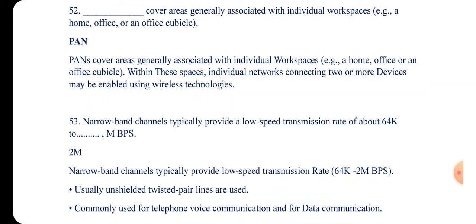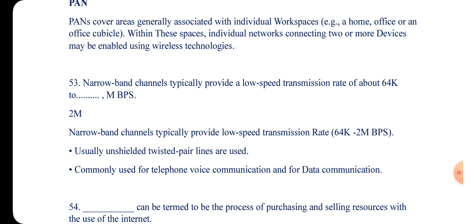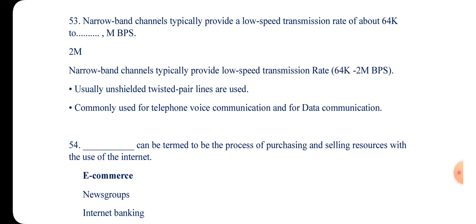Question 53: Narrow band channels typically provide a low speed transmission rate of about 68K to dash Mbps. The answer is 2 Mbps. Narrow band channels typically provide a low speed transmission rate of 68K to 2 Mbps. So if you see this question, the answer is 2M.